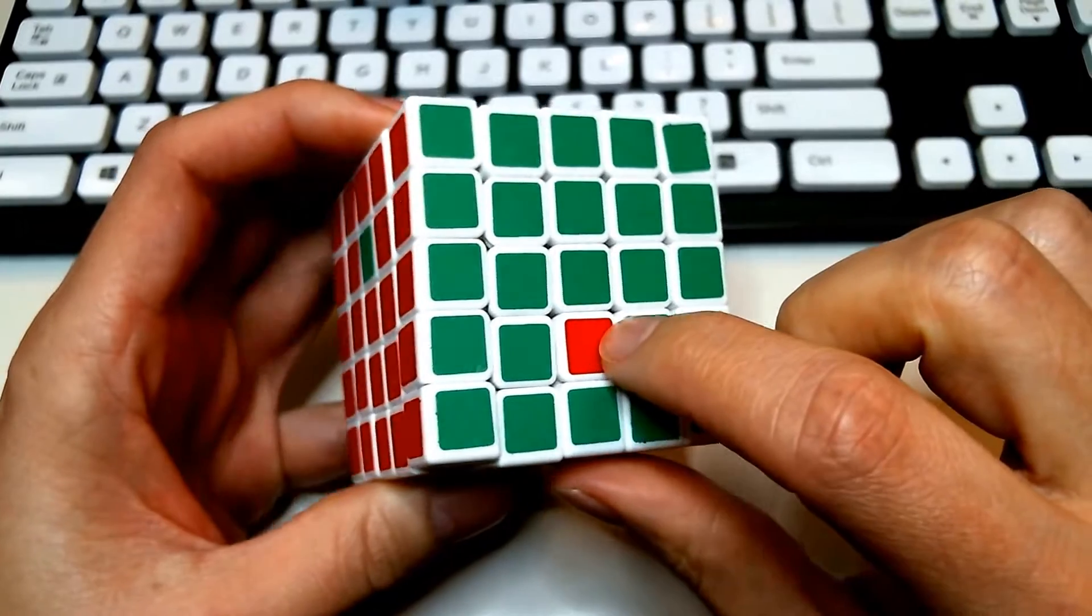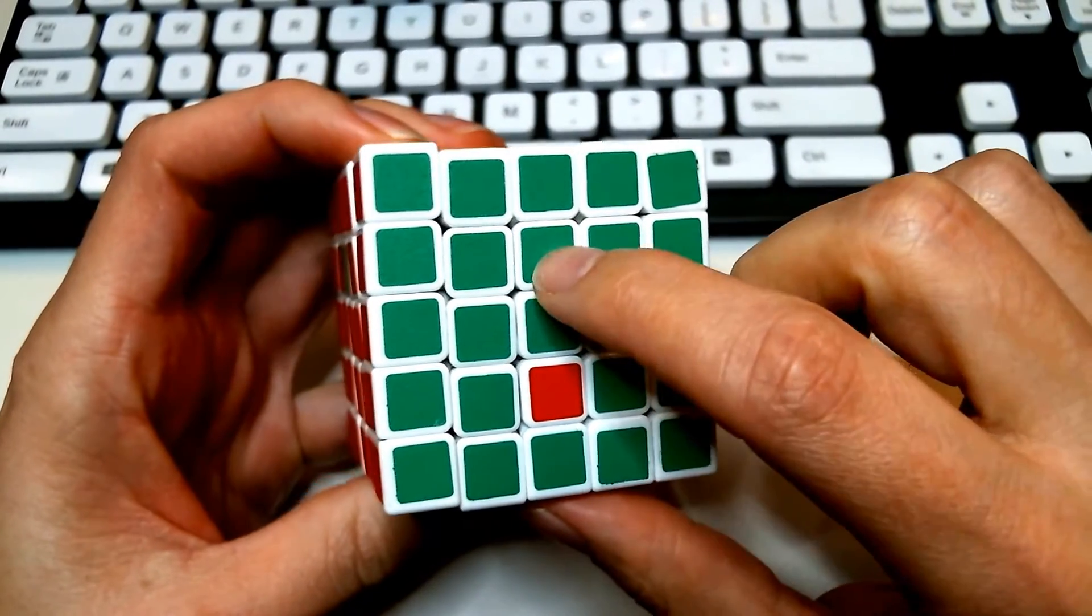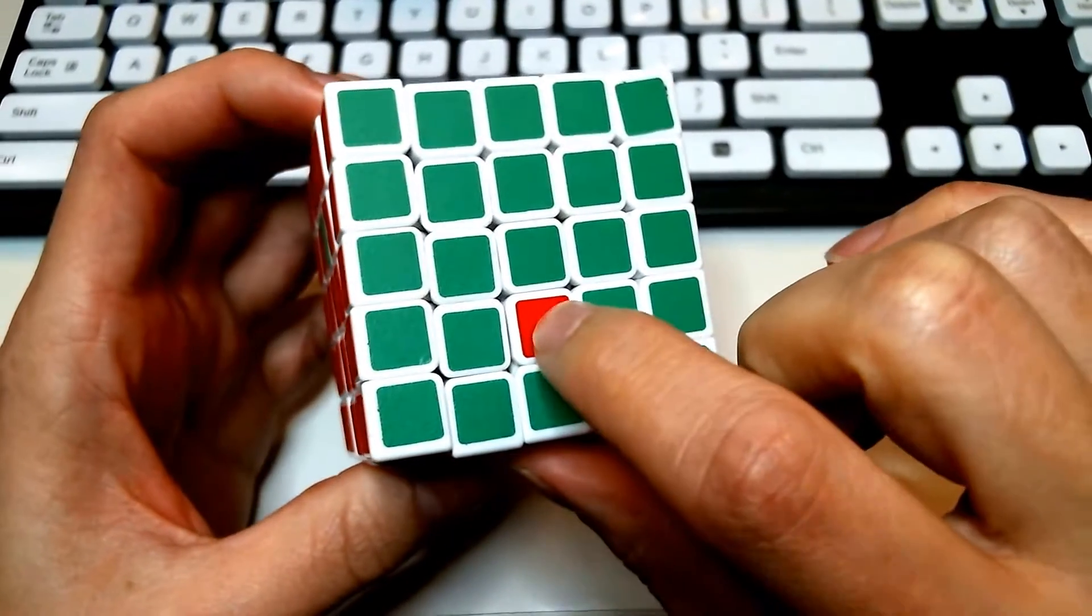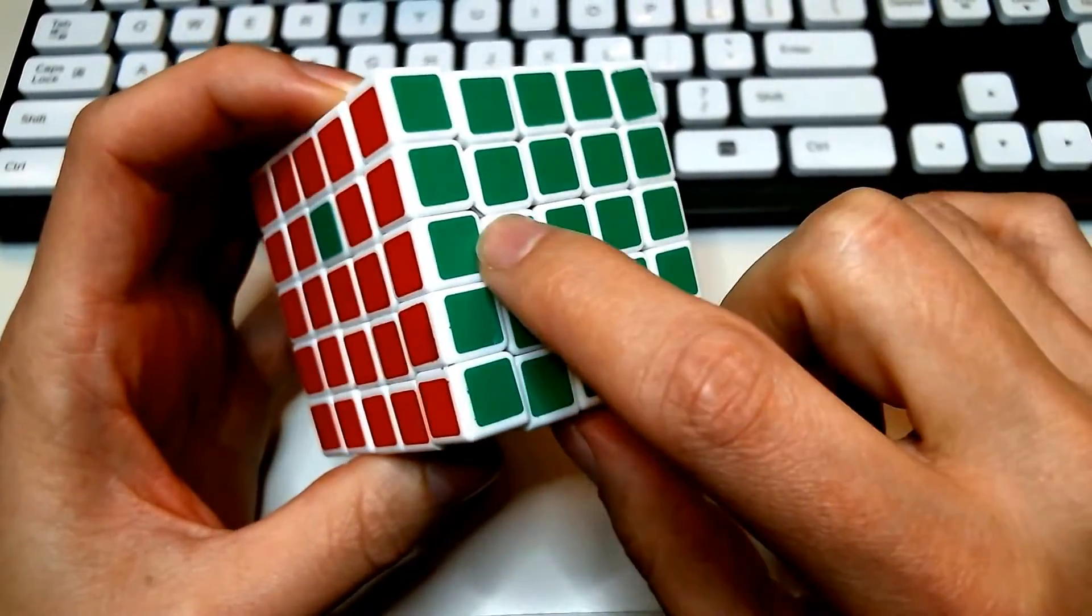So we have done a 3 cycle where we took this piece, actually I think we took this piece, we put it there, we took this piece, put it here, and we put this piece, we put it there, we did a 3 cycle of those 3 pieces.